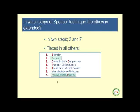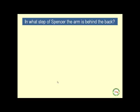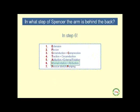In what step of the Spencer technique is the arm behind the back? This is step six — internal rotation plus abduction — where the patient's arm is placed behind their back.